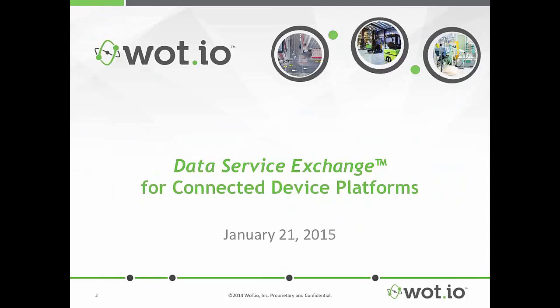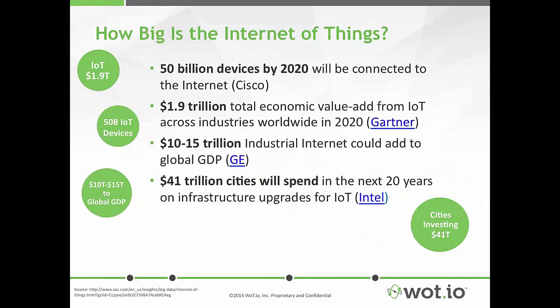Thanks, Dean. Wadio is a data service exchange for connected device platforms. The Internet of Things is a huge opportunity. Cisco predicts that there will be 50 billion connected devices by 2020. Gartner Group predicts that there will be 1.9 trillion dollars of total economic value add by 2020. GE says that the industrial Internet could add 10 to 15 trillion dollars to global GDP. And Intel estimates it will be 41 trillion dollars spent on IoT infrastructure upgrades for cities over the next 20 years. These are gigantic numbers, and it's clear that there's a huge opportunity here.